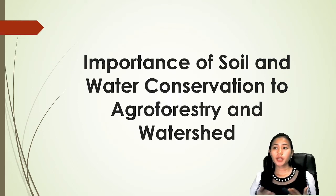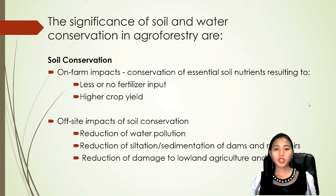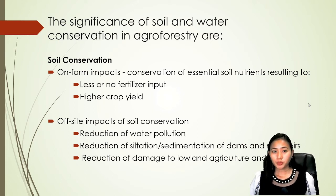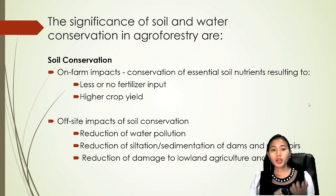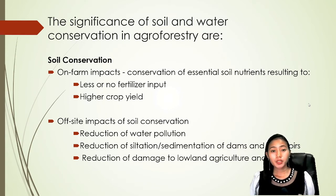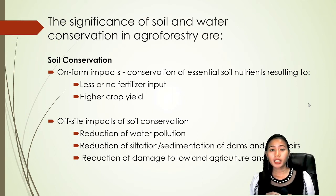The significance of soil and water conservation to agroforestry: In soil conservation, on-farm impacts include the conservation of essential soil nutrients, resulting in less or no fertilizer input. For example, if you plant cucumber in the first cropping, it takes up nutrients from the soil. After harvesting, you can replace it with string beans, which is a leguminous crop that has nitrogen-fixing bacteria, giving nutrients back to the soil. So you no longer need as much fertilizer — the leguminous crops can be rotated to replenish soil nutrients.